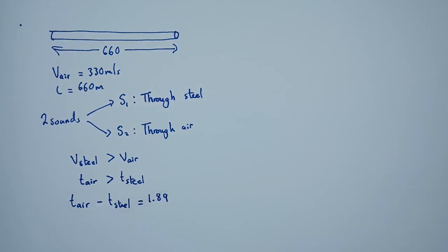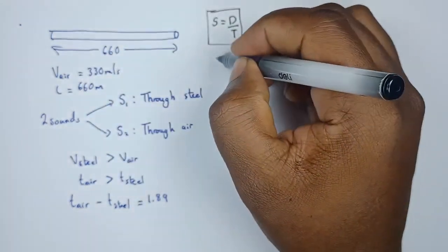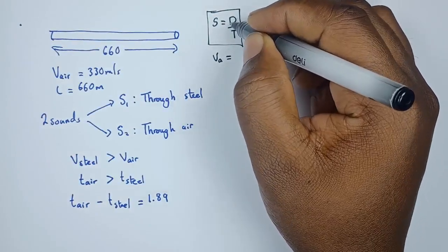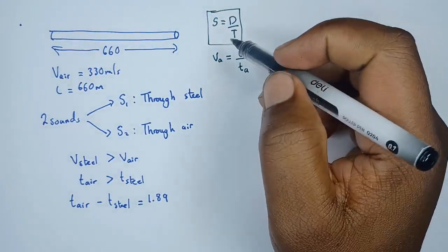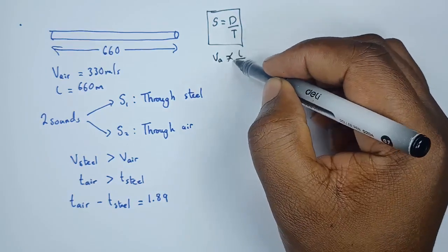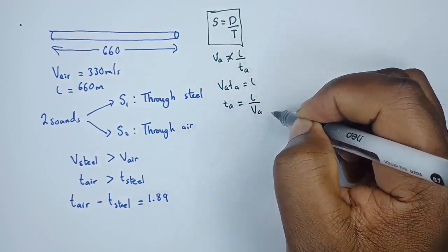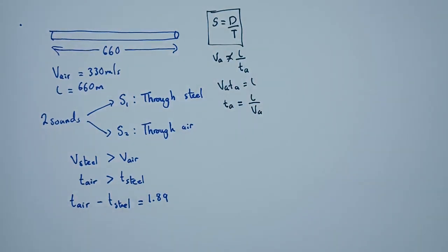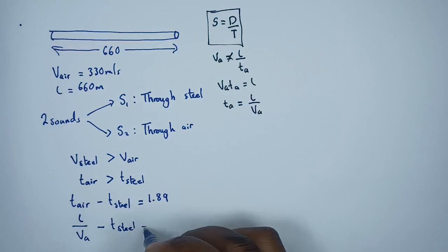Since we've been given the velocity in air, let's find an expression for time in air. We know that speed equals distance over time, so V_air = L / T_air. Making T_air the subject: T_air = L / V_air. Substituting, we get L / V_air minus T_steel equals 1.89. The length is 660 and the velocity of sound in air is 330, so 660/330 minus T_steel equals 1.89, giving us 2 minus T_steel equals 1.89.